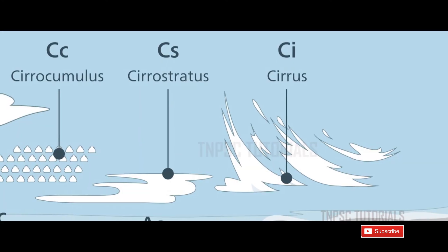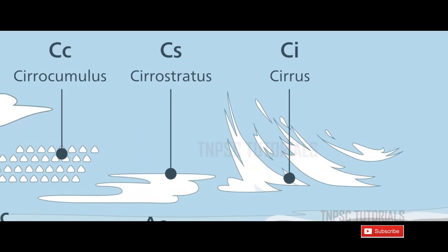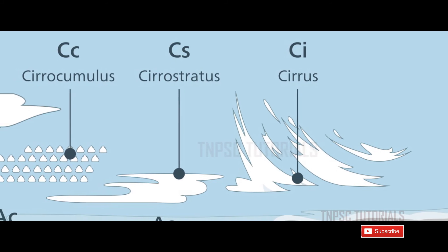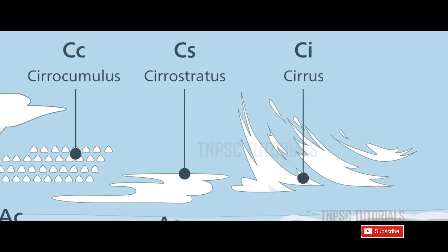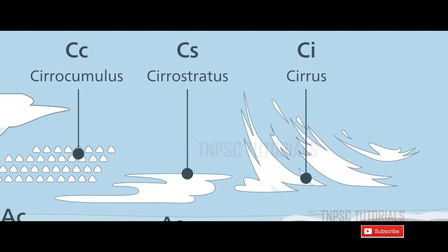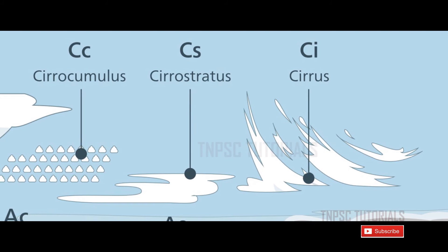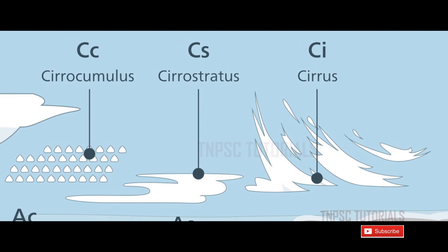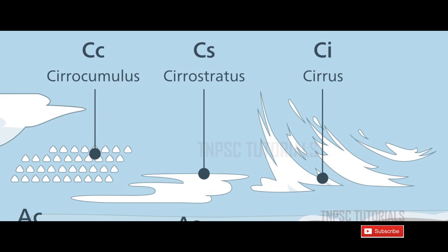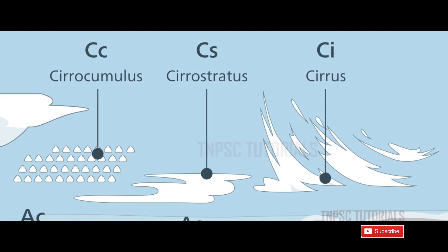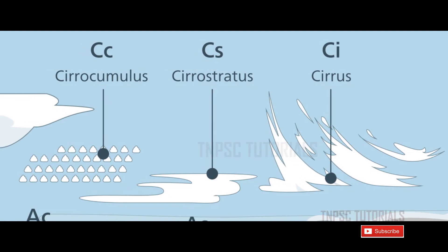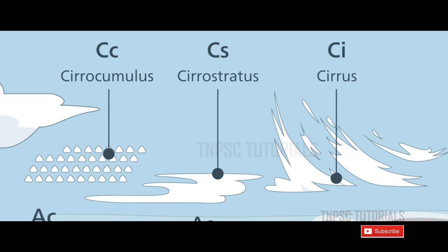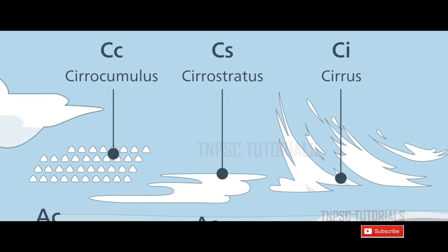Cirrostratus is a thin cloud layer that causes a halo to appear around the sun and moon. It is often seen 12 to 18 hours in advance of an unsettled weather system. Cirrocumulus clouds look like many small tufts of cotton, rippled sand, or even the scales of a fish, hence the term mackerel sky.